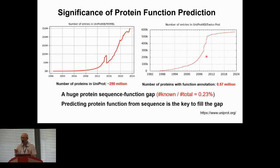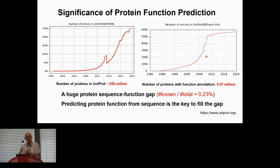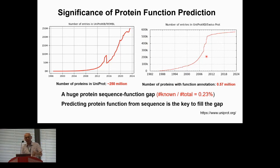I'll use a face recognition example to illustrate these concepts. For each face, no matter how you orientate it, the same face always produces the same features — meaning the model is invariant to input rotation and translation. Another case: if you rotate the face, the features also rotate in the hidden space. This is called an equivariant graph neural network, and it is sufficient to capture the essential features for prediction.